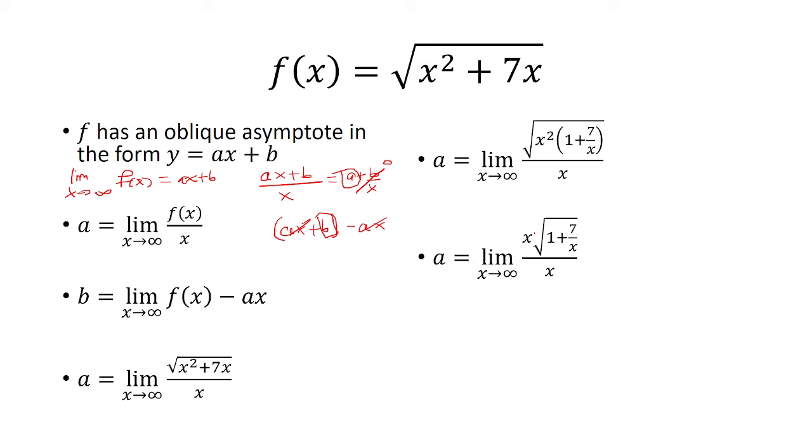And so now the x's are going to cancel, and I'm left with the square root of 1 plus 7 over x. As x approaches infinity, 7 over x goes to 0, and so we have the square root of 1, which is just 1. So, a is going to equal 1 here.